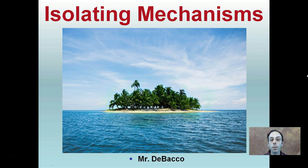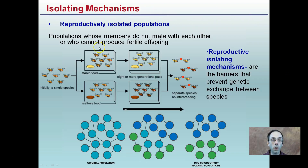Here we're going to look at isolating mechanisms — what things may keep certain individuals apart from one another that will influence the genes passed on to a generation, or that are prevented from intersecting with another species. Reproductive isolated populations are populations whose members do not mate with each other or cannot produce fertile offspring. Reproductive isolating mechanisms are the barriers that prevent genetic exchange between species.